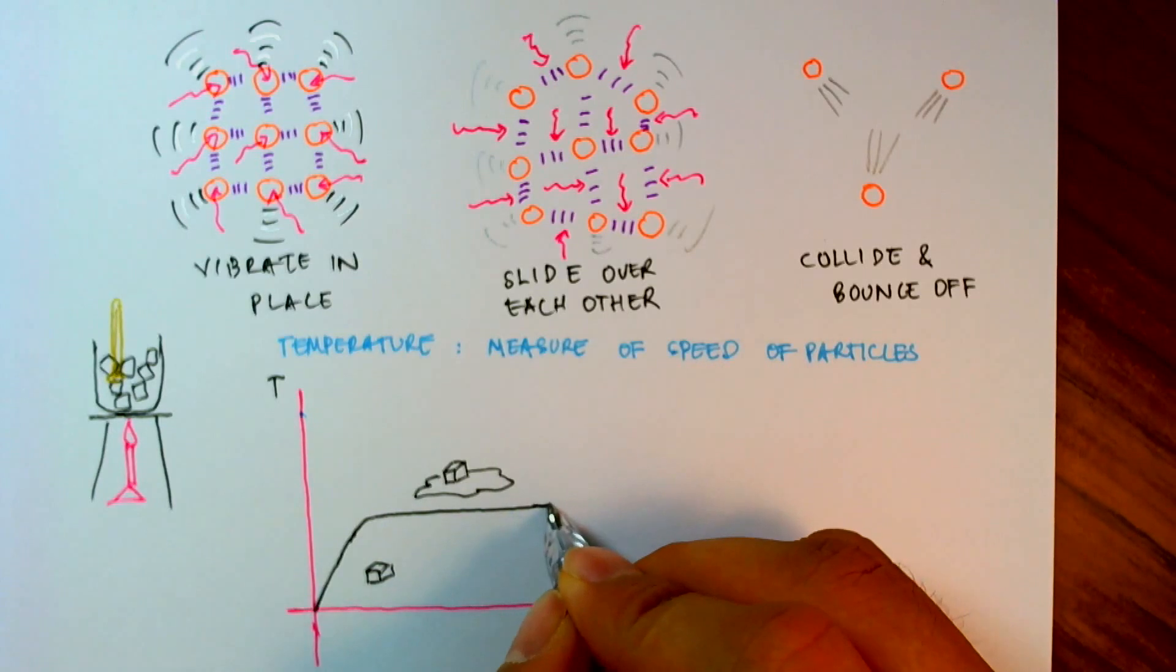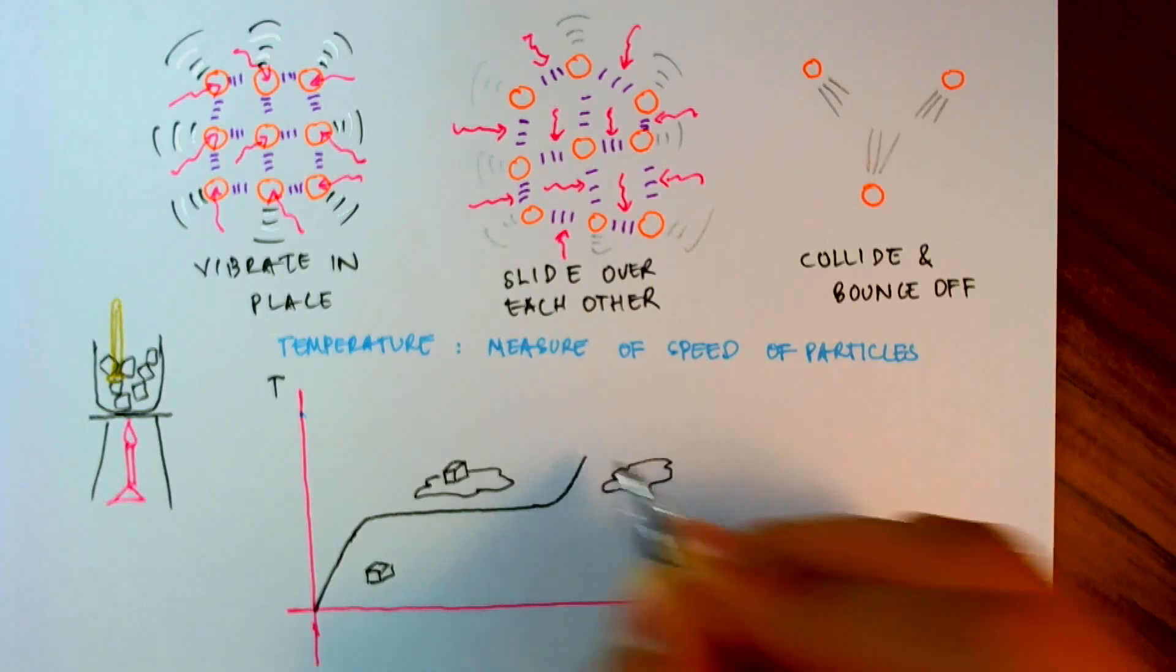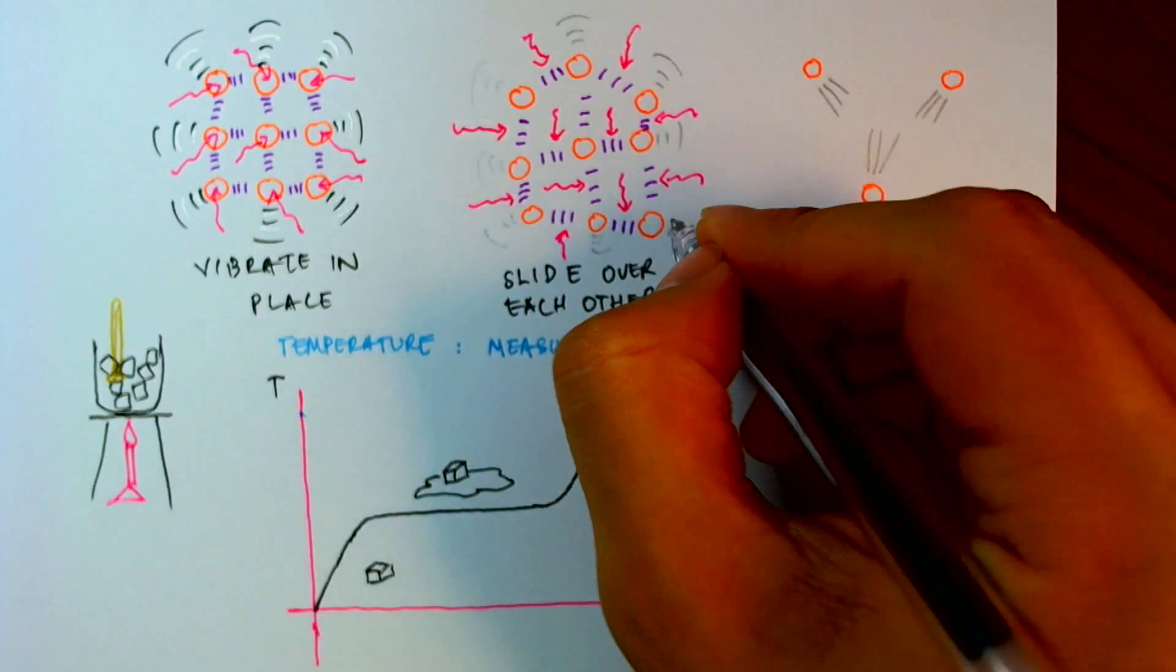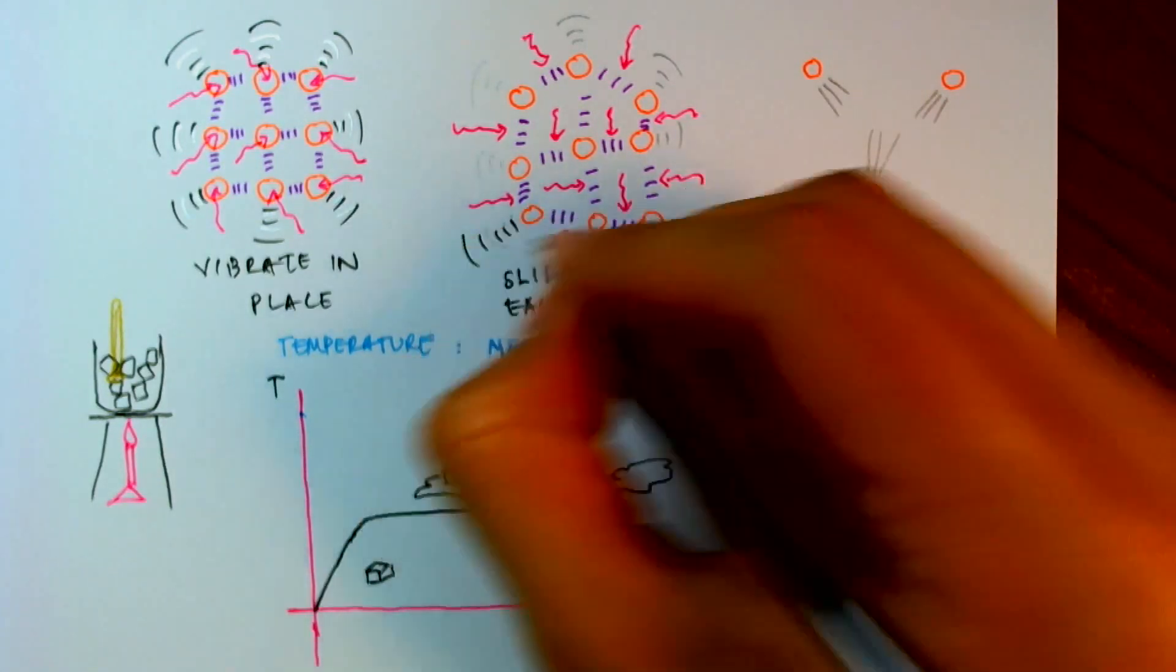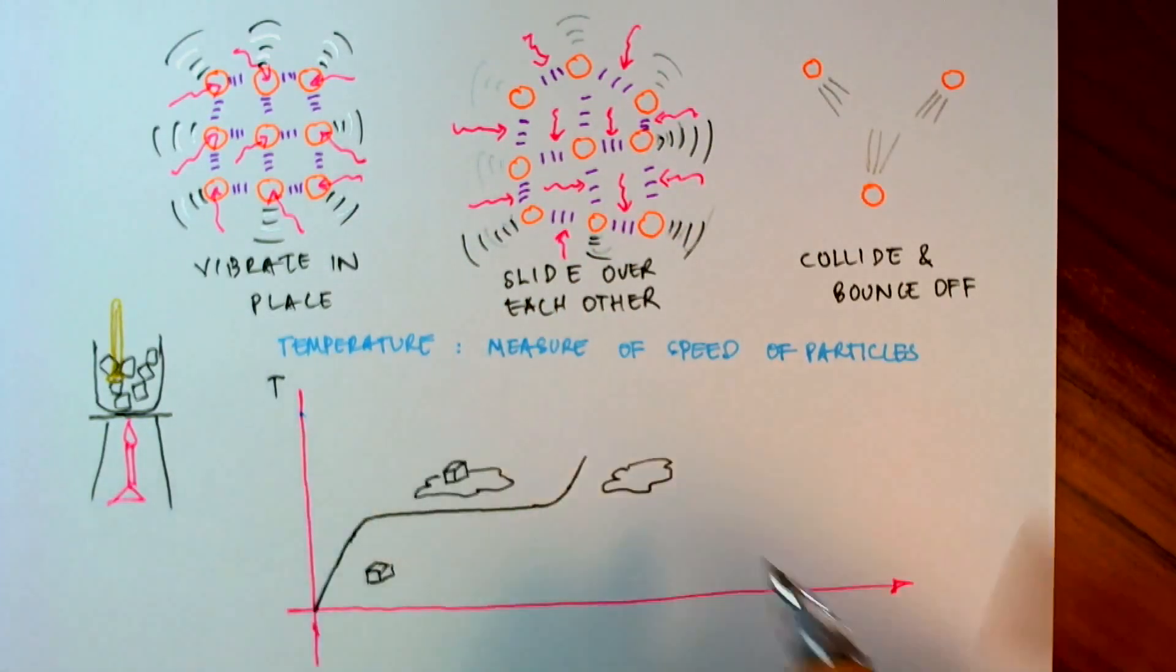And once they've all turned to the liquid, there are no more bonds to be weakened. And so we have energy going into the particles. And they start to vibrate more, meaning the speed increases. And hence, the temperature starts increasing again.